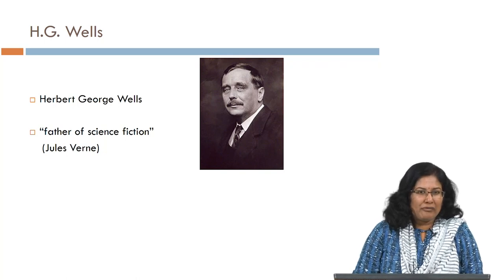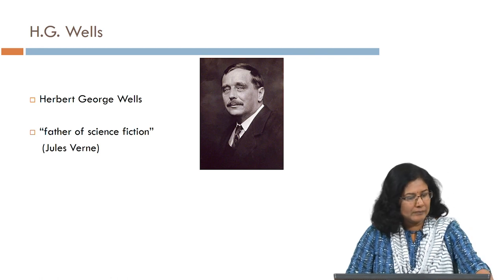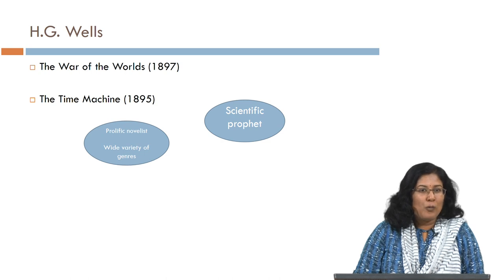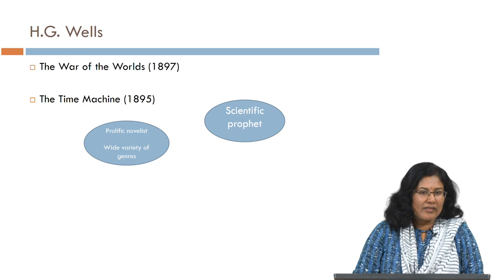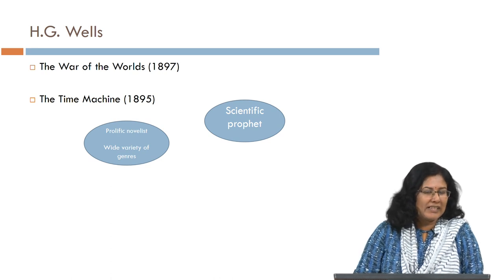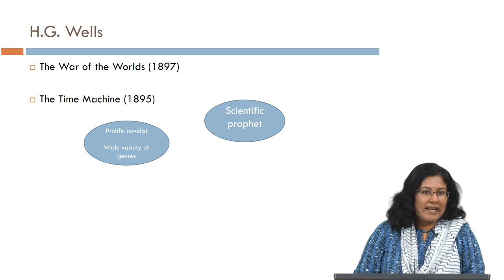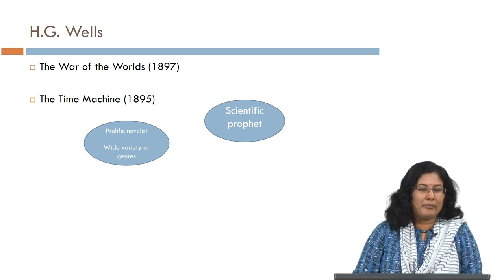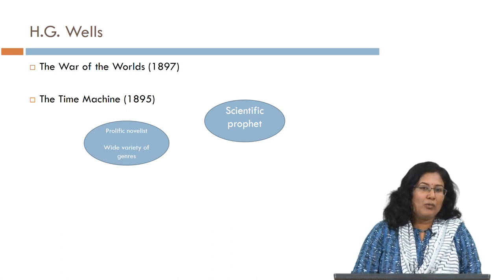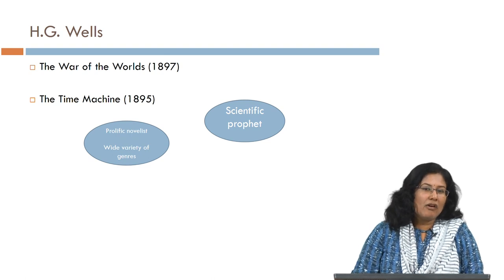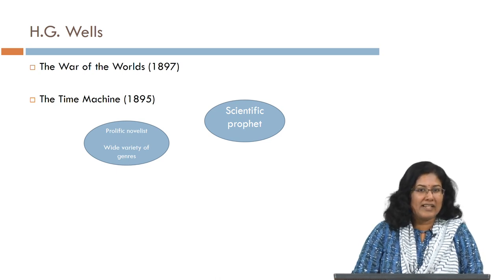H.G. Wells, to give you a brief introduction about him, is also known as the father of science fiction — a title he shares with Jules Verne. He is well known for works such as The War of the Worlds published in 1897 and The Time Machine published in 1895. He was a prolific novelist who also wrote in a variety of genres ranging from poetry to prose to autobiography to biography to satire. He is also known as the scientific prophet because he was able to predict a lot of things in the world of science and technology which actually came true in the succeeding decades.